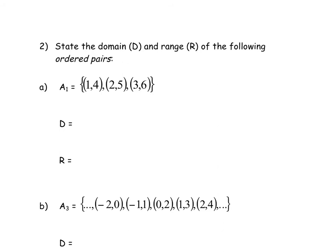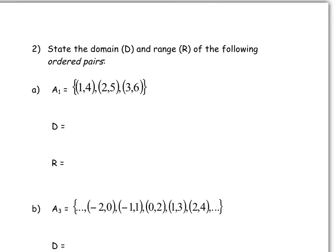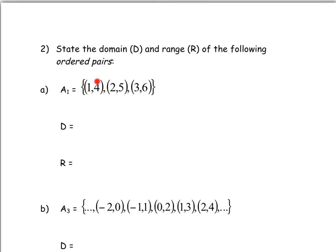Here's another example with ordered pairs — so individual points. The X and Y values are listed. Notice this is a function because the X values are not repeating. The domain is all the possible X values in order: 1, 2, 3. And the possible values of Y are 4, 5, and 6.